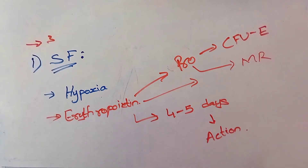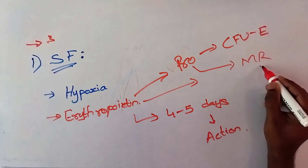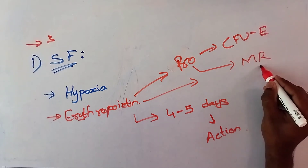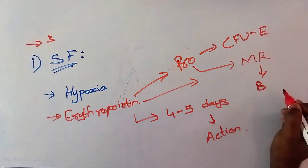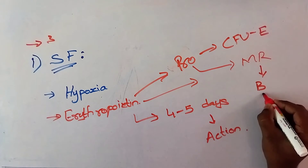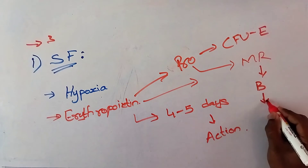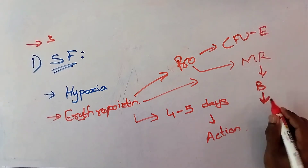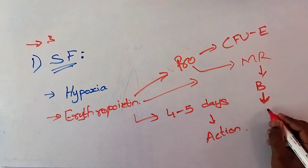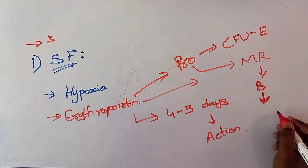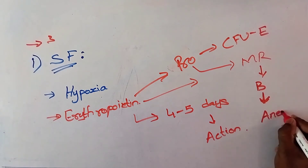Erythropoietin also helps in the release of erythrocytes into blood after maturation. After matured RBC is formed, it helps in the release of this matured RBC into blood. When released into the blood, the blood level of erythropoietin increases. If this erythropoietin is more than necessary, this condition may cause anemia.